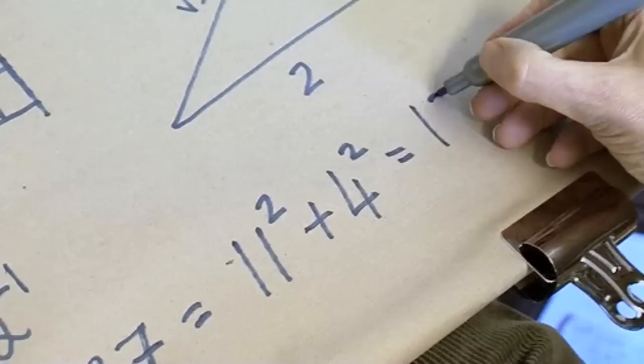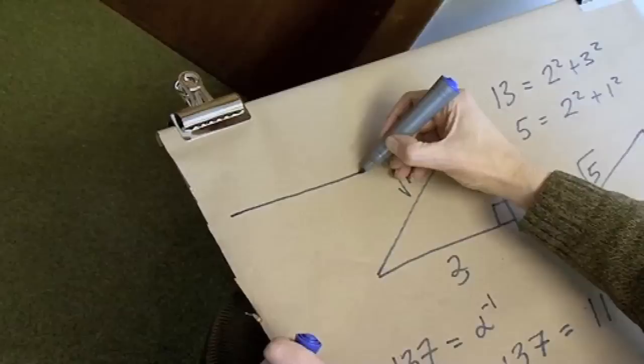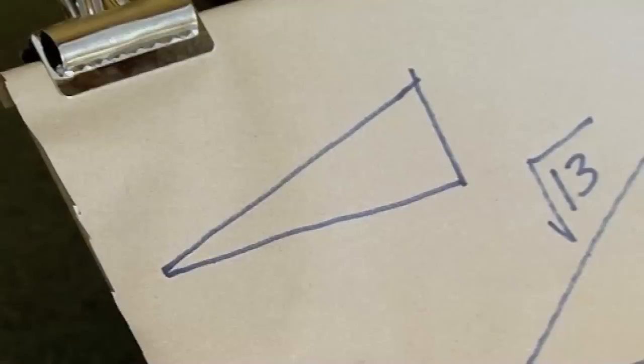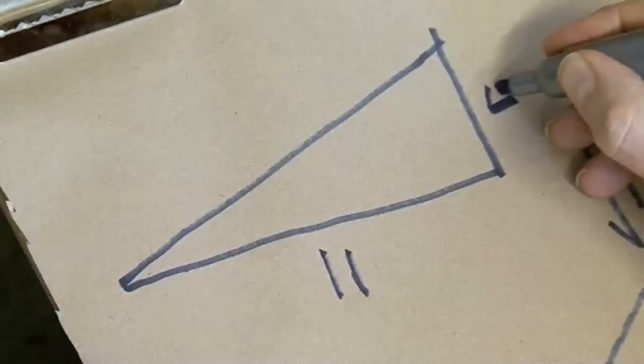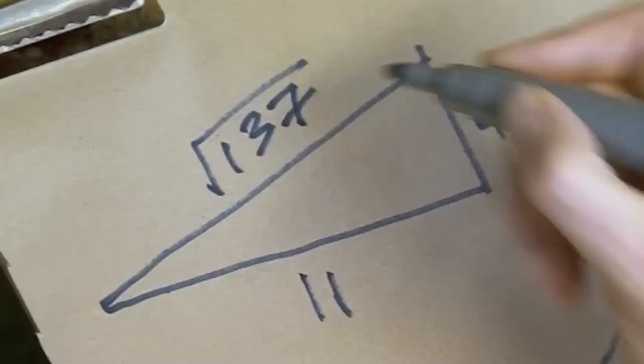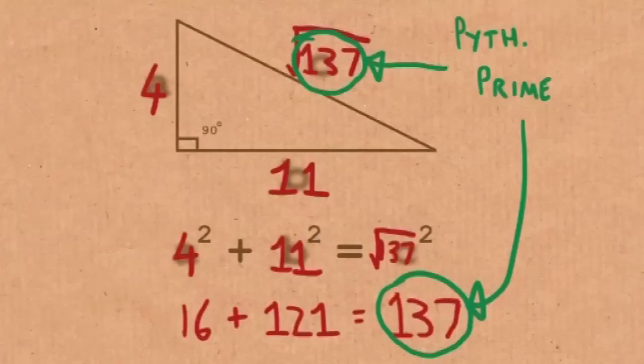So can we draw the Pythagorean triangle for that? It will look something like this. I've changed the scale of my units here a little bit. So we've got 11 there, 4 there, and then this diagonal is the square root of 137, a nice Pythagorean prime. So just to be absolutely clear, the hypotenuse of a right-angled triangle when the other two sides are integers won't be a Pythagorean prime. Its square root is a Pythagorean prime.